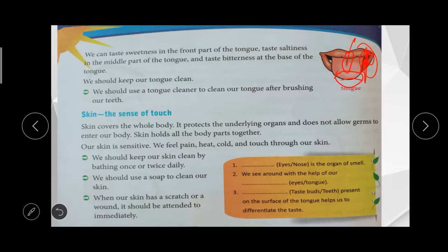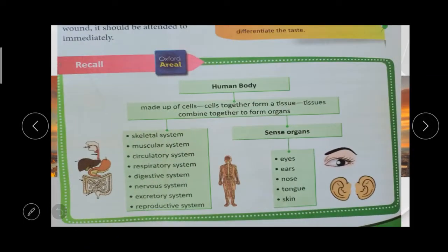We have completed the sense organs. The five senses are: hearing, smelling, tasting, touching, and seeing. The human body is made up of cells, cells form tissues, and tissues form organs. The systems we have learned are: skeletal, muscular, circulatory, respiratory, digestive, nervous, excretory, and reproductive systems, and finally the sense organs — eyes, ears, nose, tongue, and skin.